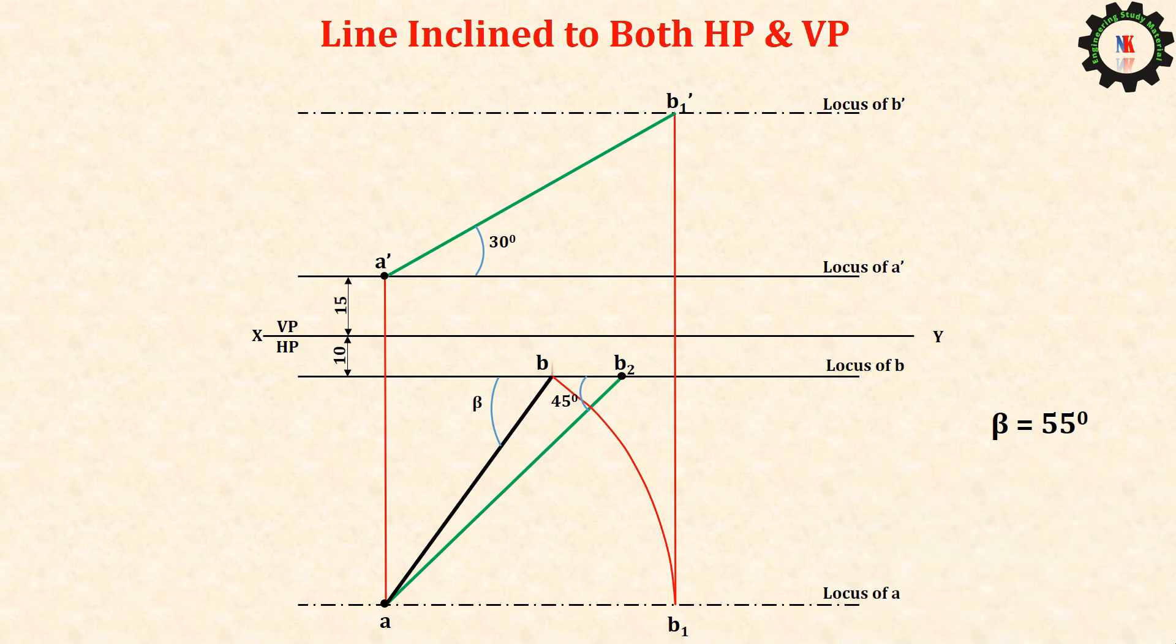To obtain front view draw a vertical projector from B to cut the locus of B dash. To obtain the front view join a dash and B dash which is inclined at pi degrees with respect to HP.